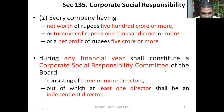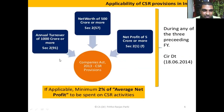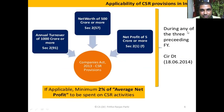The CSR committee must have at least three directors, at least one of whom is an independent director. Annual turnover 1,000 crore, net worth 500 crore, or net profit 5 crore or more — these are the criteria. The minimum CSR spend is 2%, and these three conditions have to be seen during any of the three preceding financial years. If any condition is met in those three years, CSR provisions are applicable.